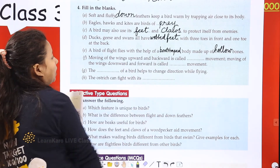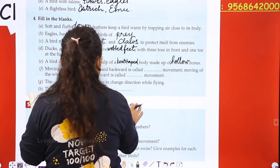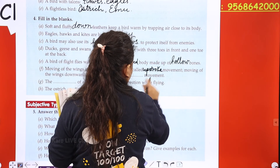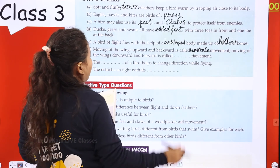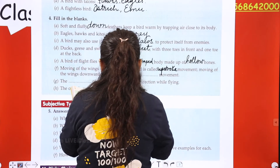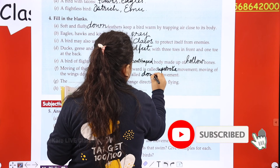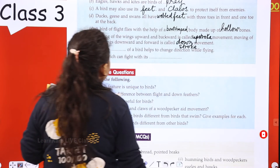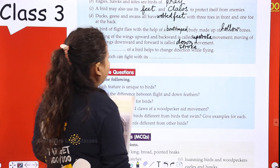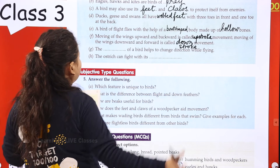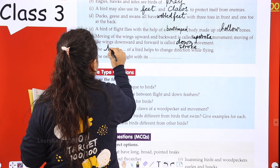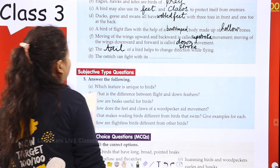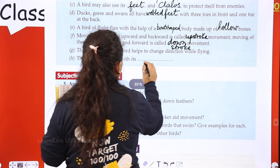Moving the wings upward and backward is called the upstroke movement. Moving the wings downward and forward is called the downstroke movement. The tail of a bird helps it change direction while flying. The ostrich uses its feet to run.